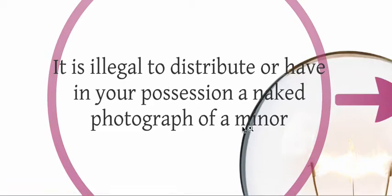They understand that being a minor is under 18. Distributing means emailing, sending, texting, tweeting, putting on their Facebook feed. Having in their possession means it's on their computer, been emailed to them, or texted to them. However, they really don't understand this concept fully, because when I address it like this and say, what if I was 17 and you were 17 and I sent an inappropriate photograph of myself to you — would that be okay?